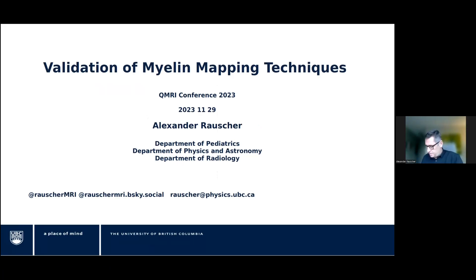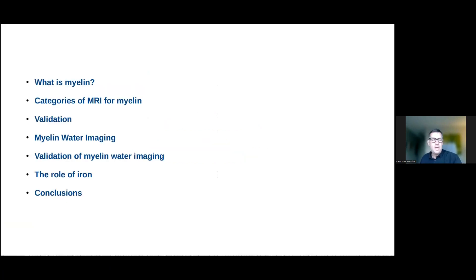Thanks so much for the introduction. I'll jump right in so we don't lose any more time. I'm going to talk about myelin mapping, and particularly myelin water imaging, with a bit of a focus on the broader concept of myelination validation. I will try to explain what is involved in validation at the example of myelin water imaging. Briefly, I will talk about what myelin is, categories of myelin mapping with MRI, validation at the example of myelin water imaging, the role of iron as one of the confounders in almost all quantitative MRI, and then conclude with one quick slide.